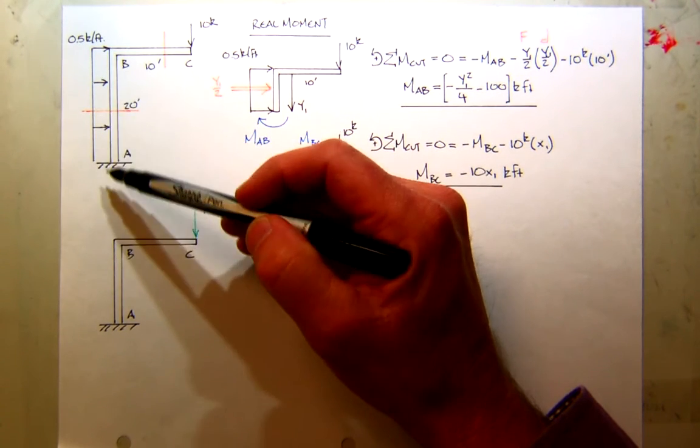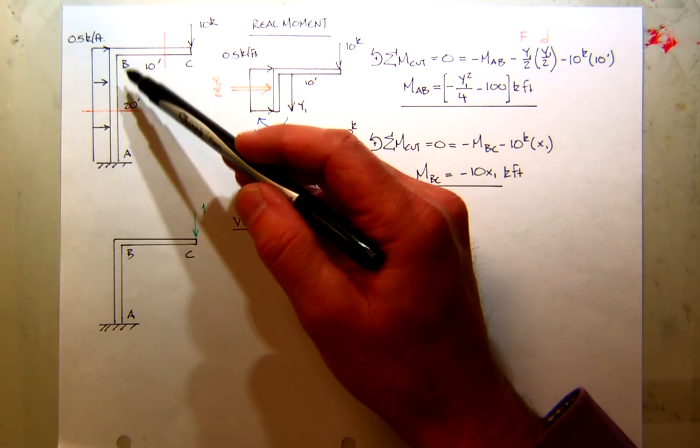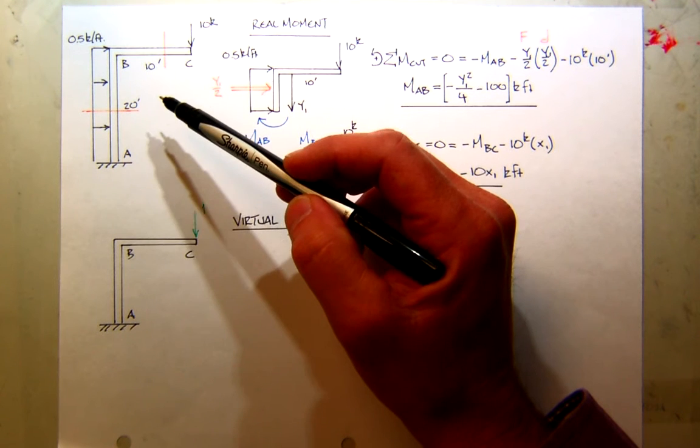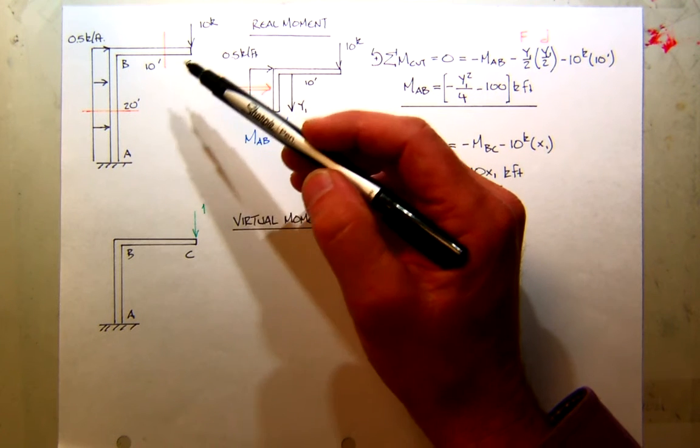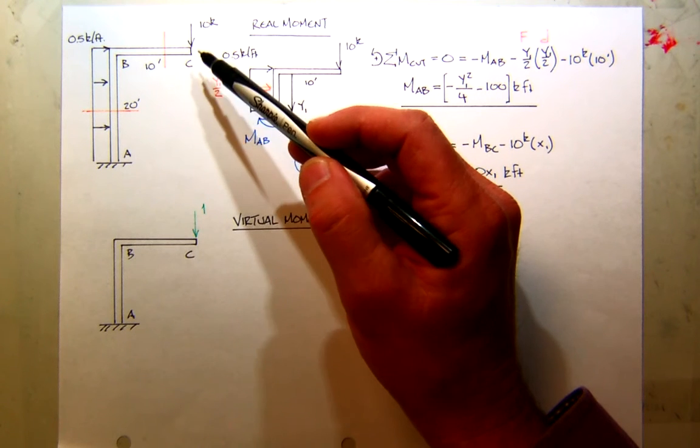We had, on the section AB here, we had this nice horizontal load, probably like a wind load. Then the cantilever part here at the top, there was a distributed load. And the problem wanted to know the displacement at this point C, vertical displacement.